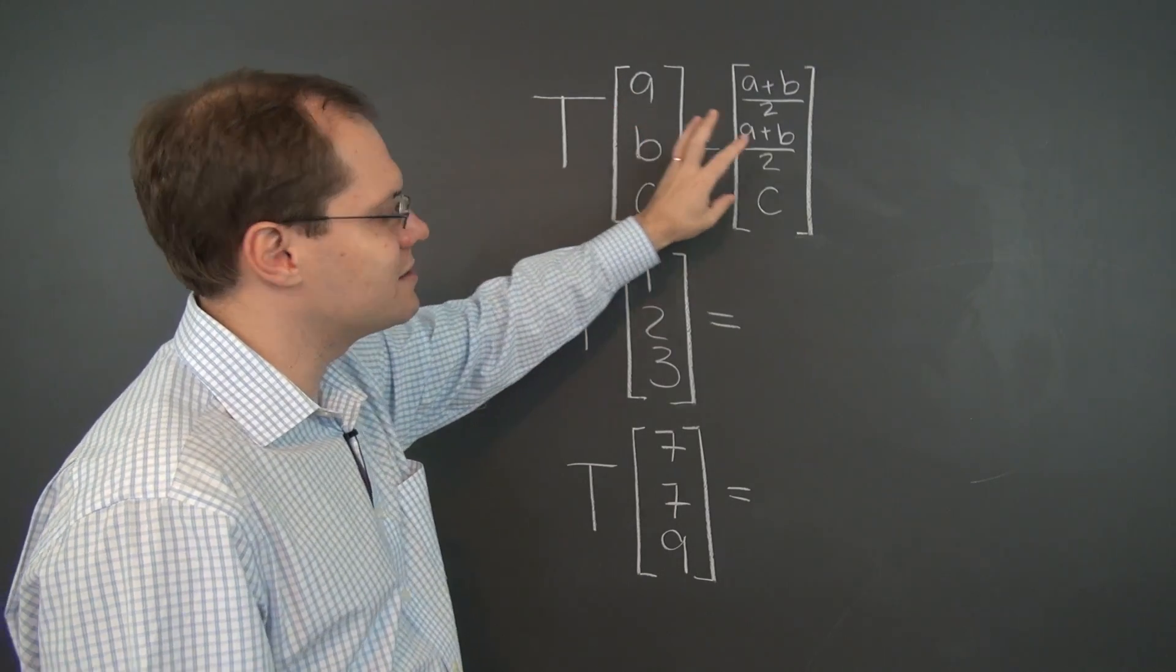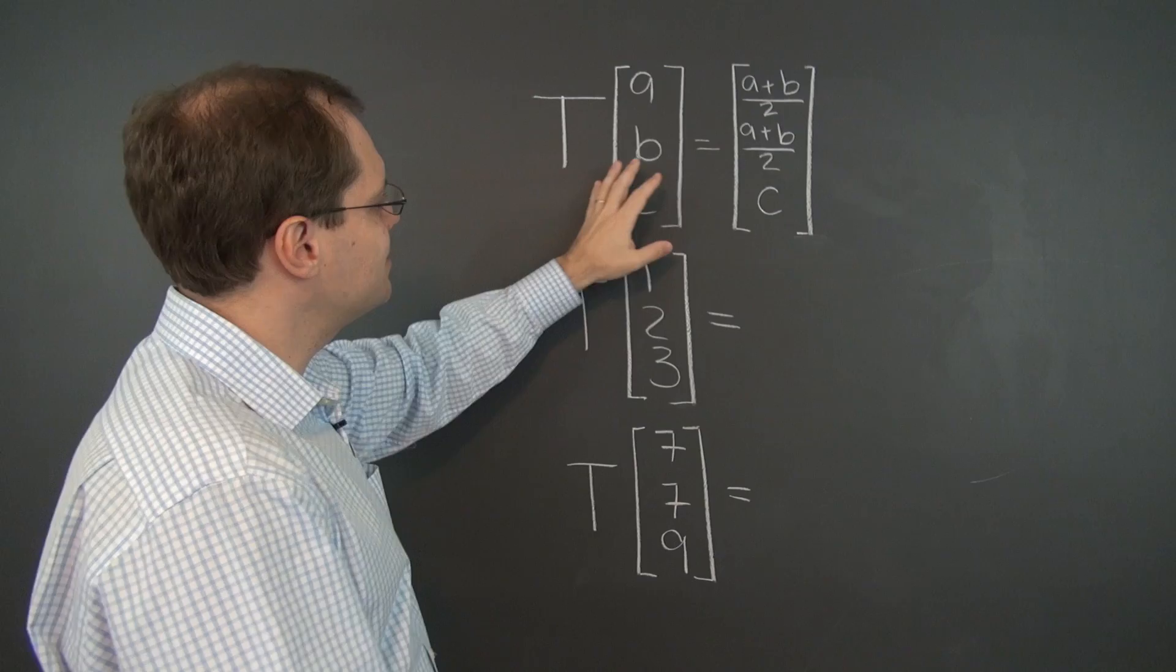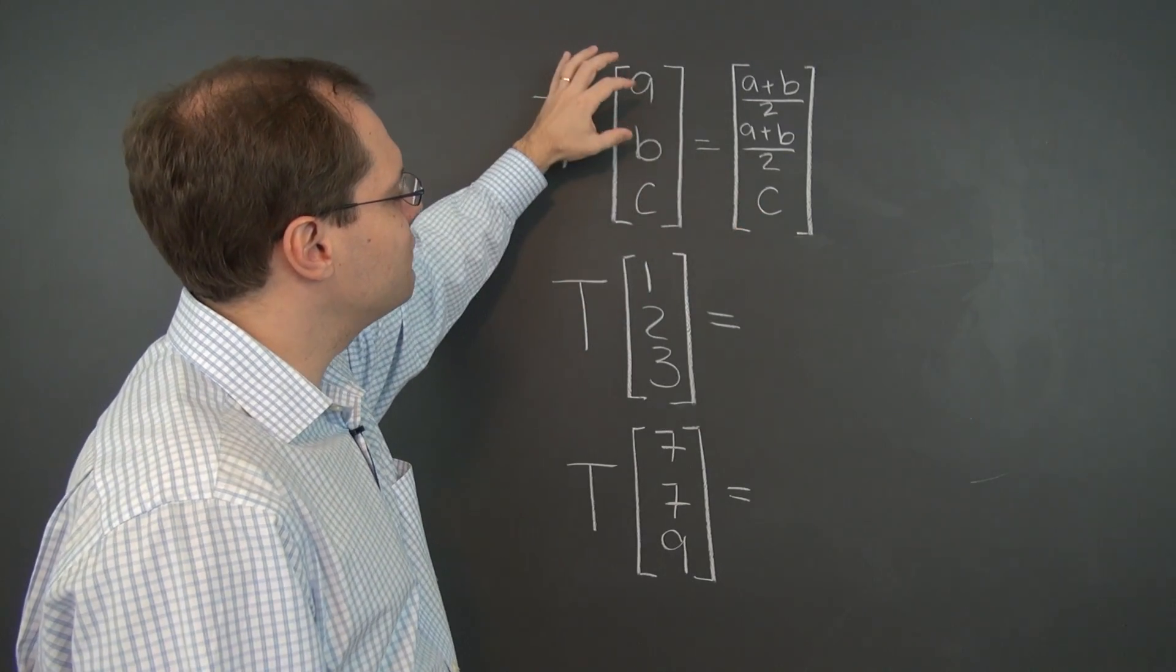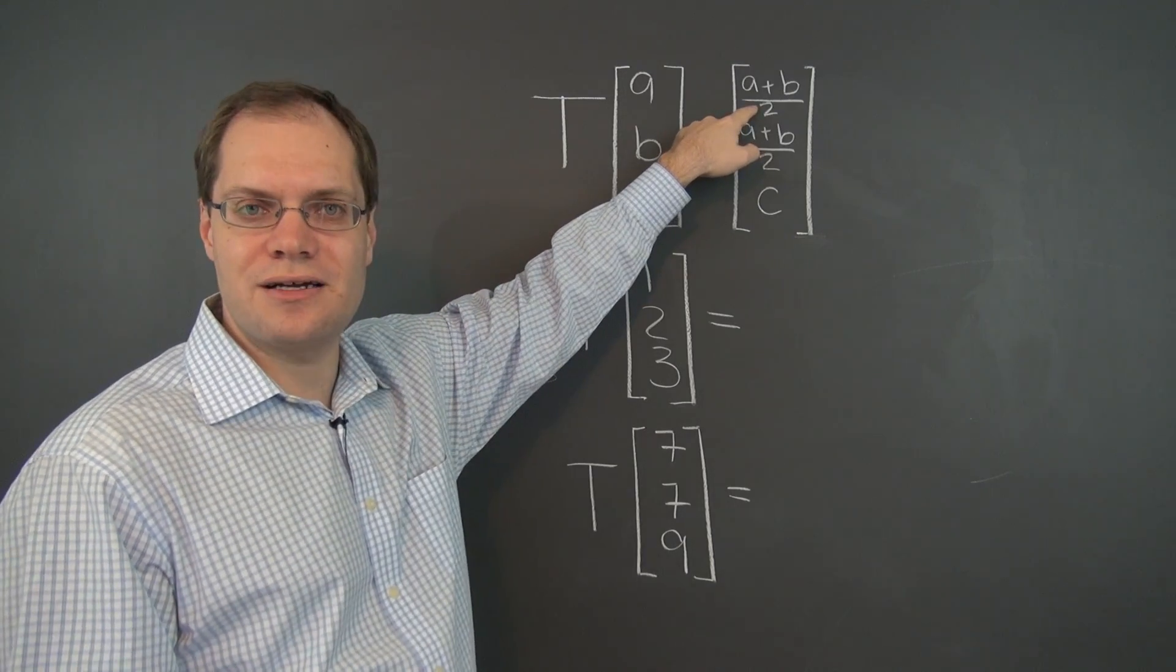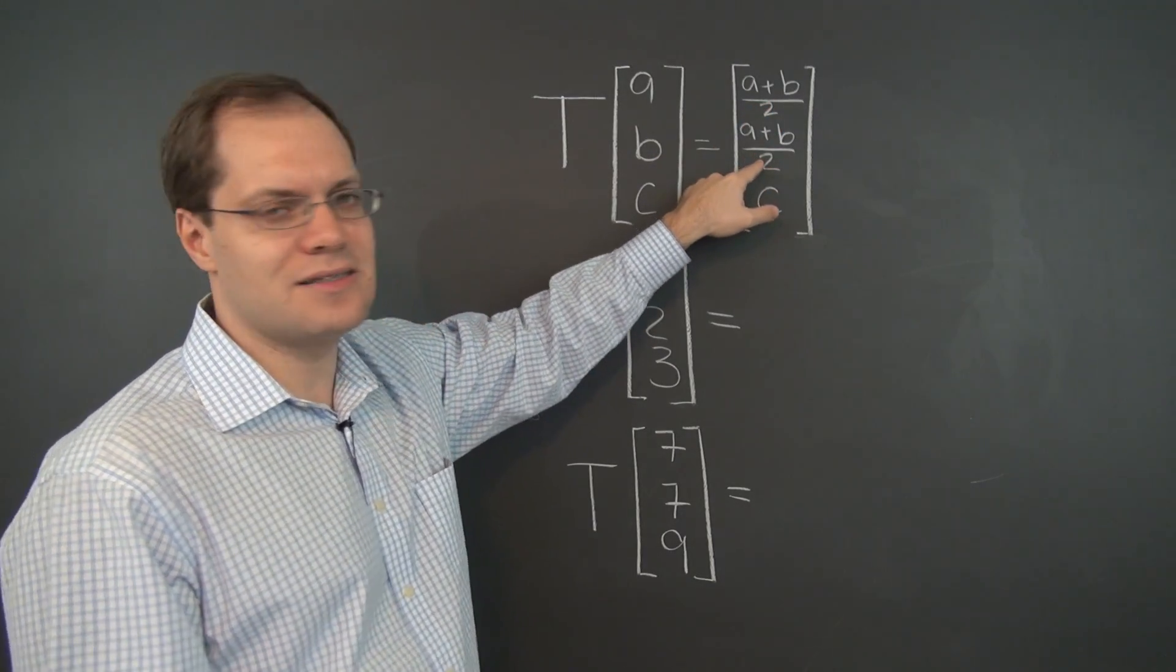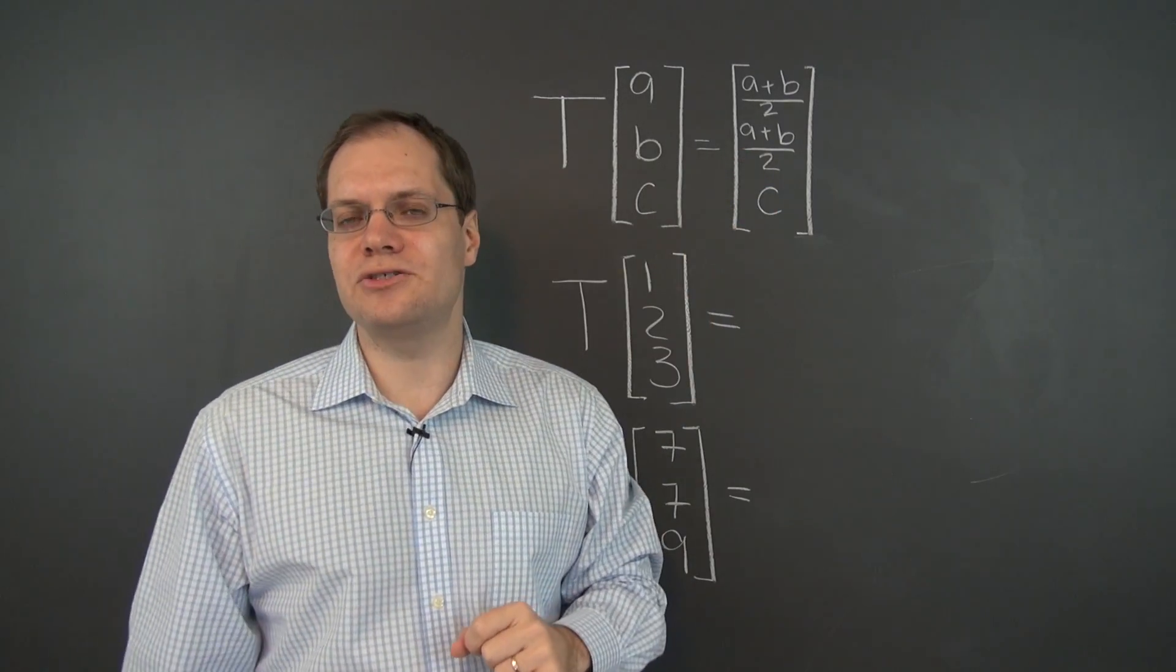Let's translate the expression into words. This transformation invites you to replace the first entry with the average of the first and second, replace the second entry with the average of first and second also, and leave the third entry unchanged.